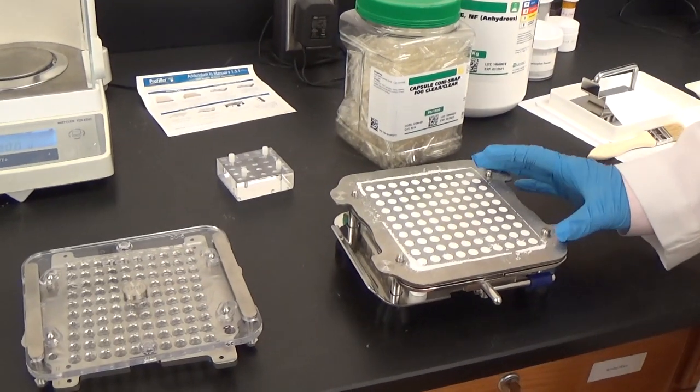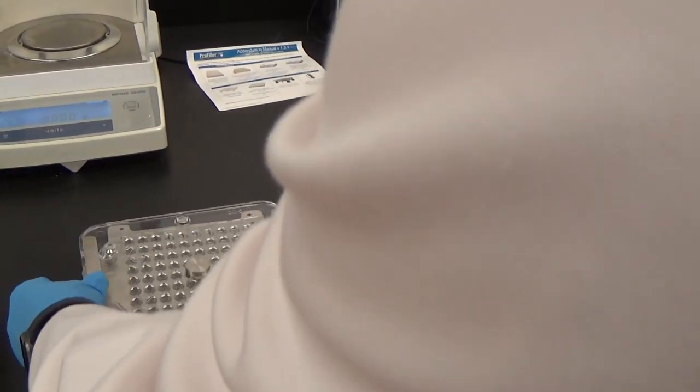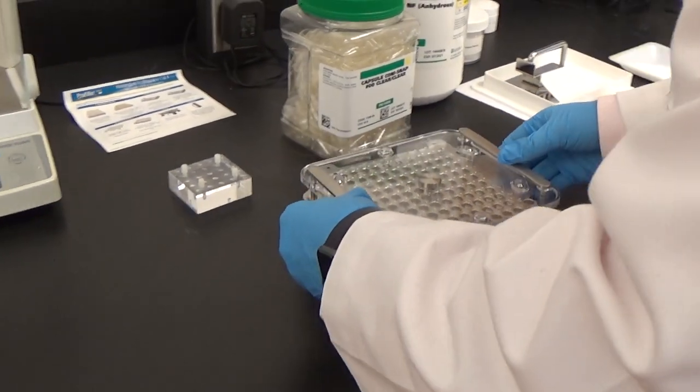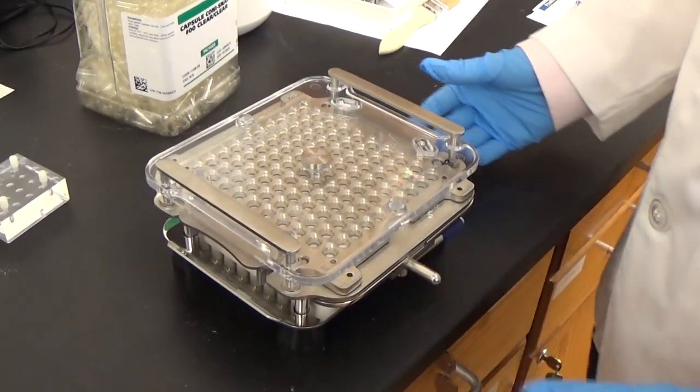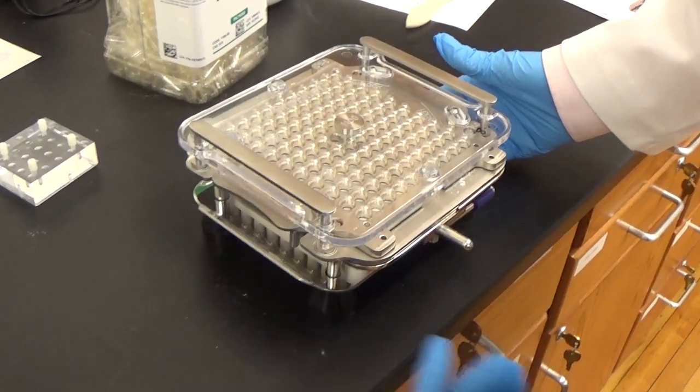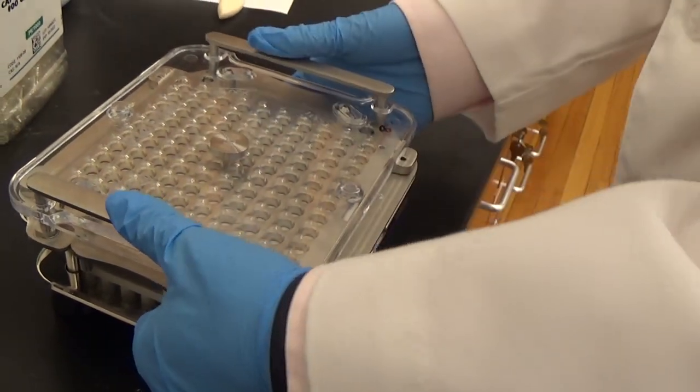Once we have the bottoms filled, we want to then get our tops and set that on top of the machine. Once it is in place, we want to make sure that it's locked and then take that beginning part of the loader at the very bottom and press on the top to make sure that they are in the place they need to be.